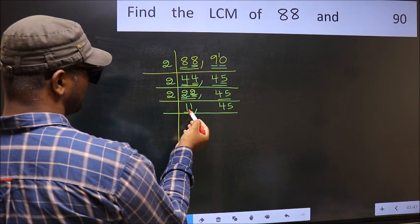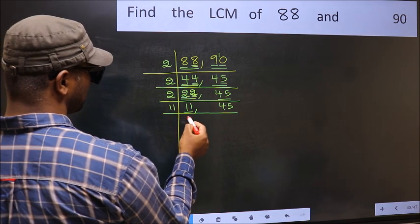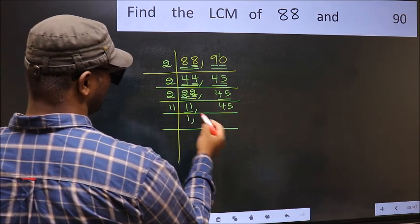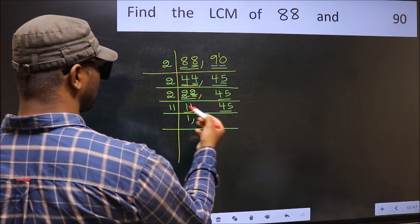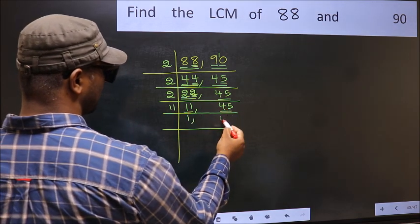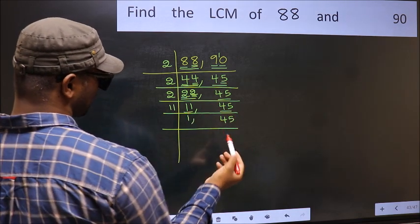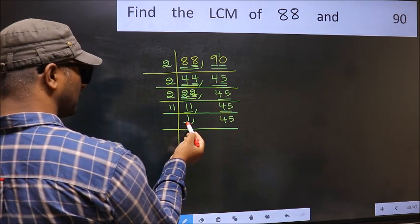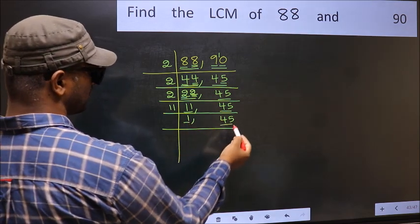Now we have 11 here. 11 is a prime number, so 11 times 1 is 11. The other number 45, not divisible by 11, so write it down as it is. Now we got 1 here, so focus on the next number 45.